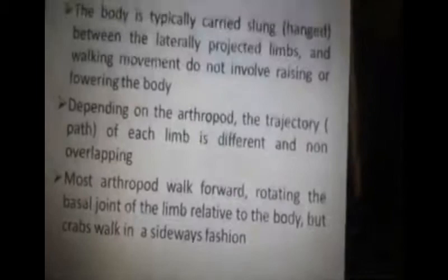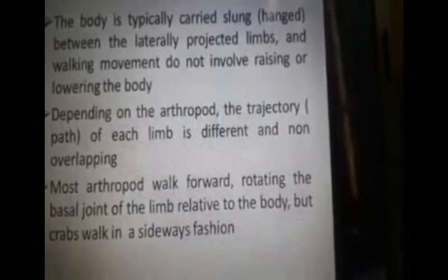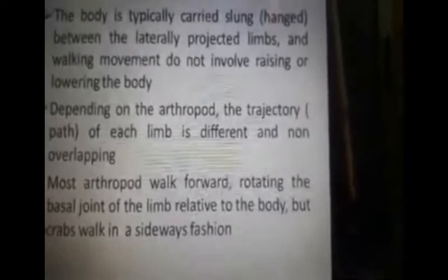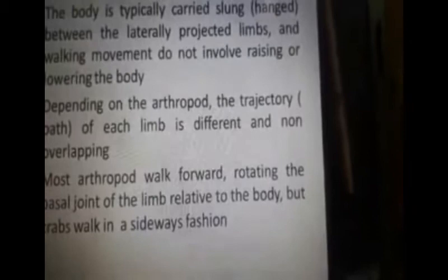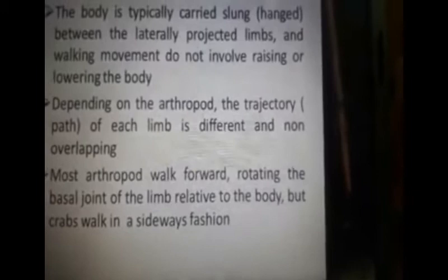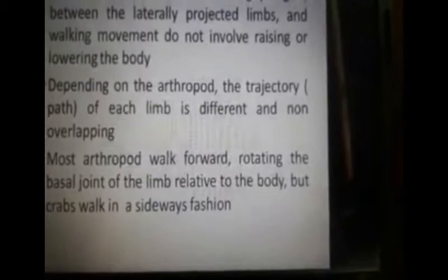The body is typically carried slung between the laterally projected limbs. Laterally projecting limbs during walking movement do not involve raising or lowering the body. Depending on the arthropod, the trajectory — the path of each limb — is different and non-overlapping. Most arthropods walk forward, rotating the basal joint of the body, but crabs walk in a sideways fashion.